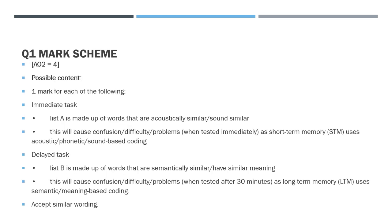Mark scheme - it's all AO2, so application. One mark for each bullet point. For the immediate task: List A is made up of acoustically similar words - give an example of two that sound similar. This causes confusion when tested immediately as short-term memory uses acoustic coding - two marks. For the delayed task: List B is made up of semantically similar words - give an example. This causes confusion after 30 minutes as long-term memory uses semantic coding. One mark per bullet point; need all four for full marks.